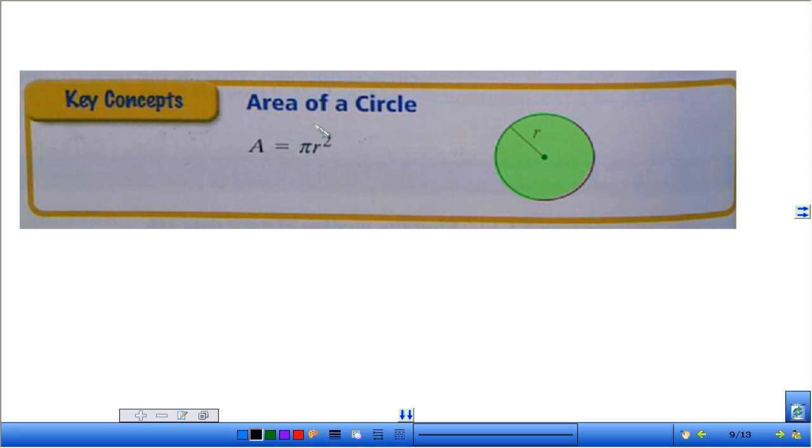So again, the area of the circle is everything on the inside. The formula for the area of the circle is right here. So it's different than your circumference. The area of the circle equals pi, which is what again? 3.14 times your radius squared. Who can tell me, explain to me what radius squared means?